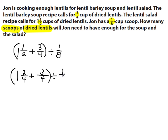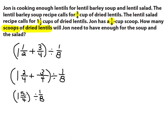Now my denominators are the same. Since I'm adding, I can leave the whole number as is. I keep the one, add the numerators two plus three to get five-fourths, giving me one and five-fourths, and divide that by one-eighth. I have two options: convert this mixed number to an improper fraction now, or simplify the improper fraction part first. Since I don't need just the total lentil amount, I'll convert to an improper fraction to prepare for division.